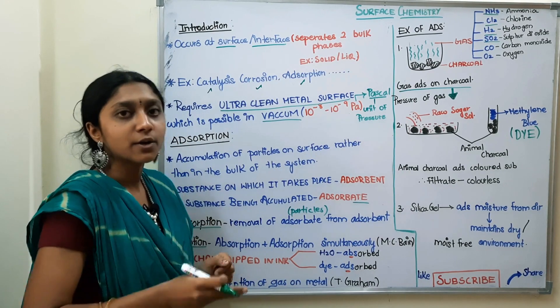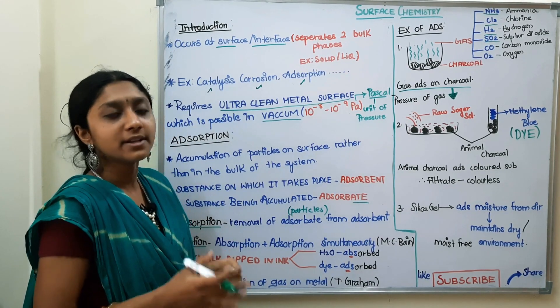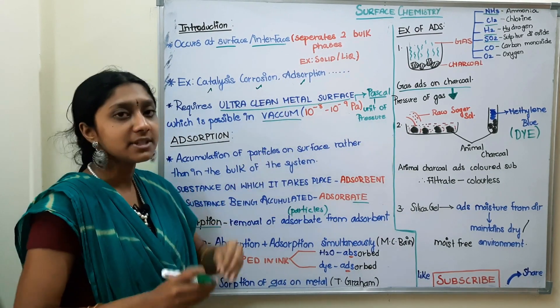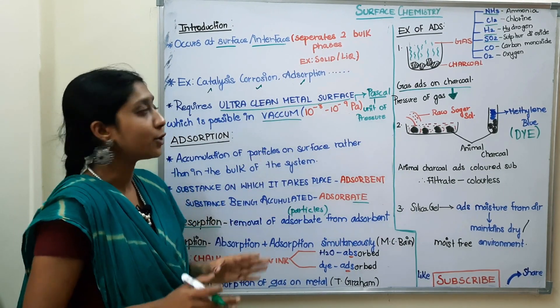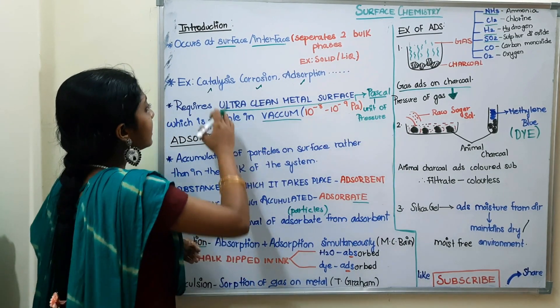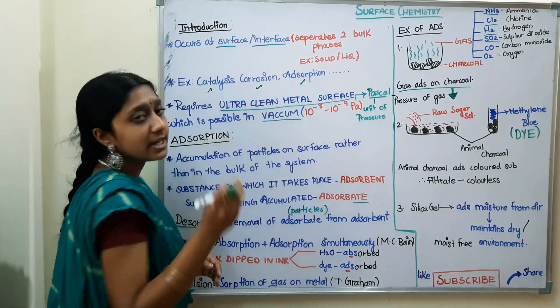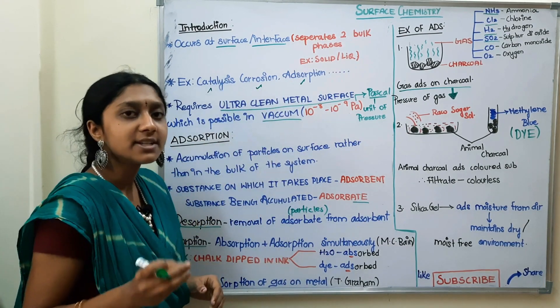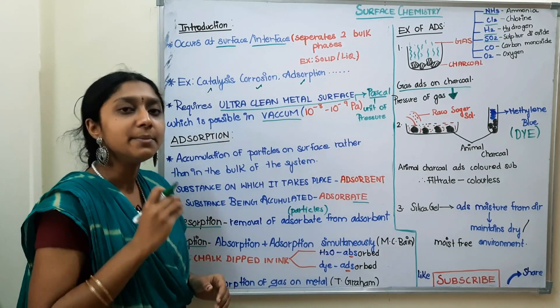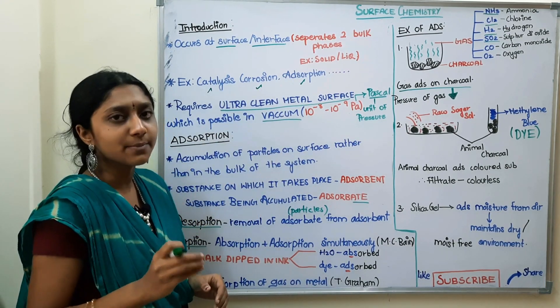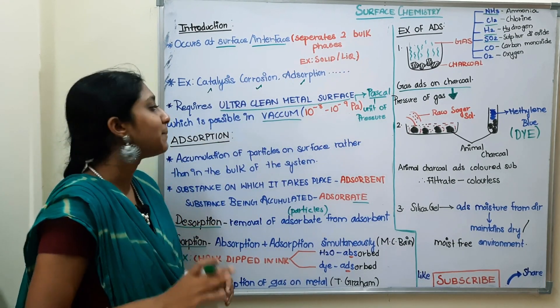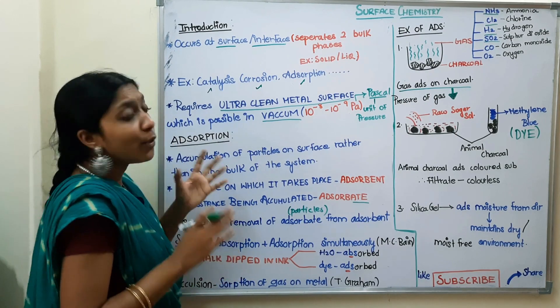We are going to learn about Surface Chemistry, which means topics like catalysis, corrosion, adsorption, dissolution, and crystallization. We will talk about many examples in this chapter.